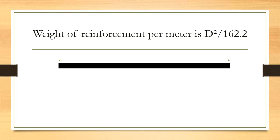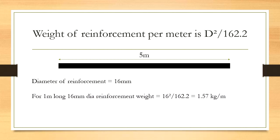That means if this is a reinforcement and the length of it is 5 meter and the diameter of the bar is 16 mm, then for 1 meter long 16 mm diameter bar the weight shall be 16 square